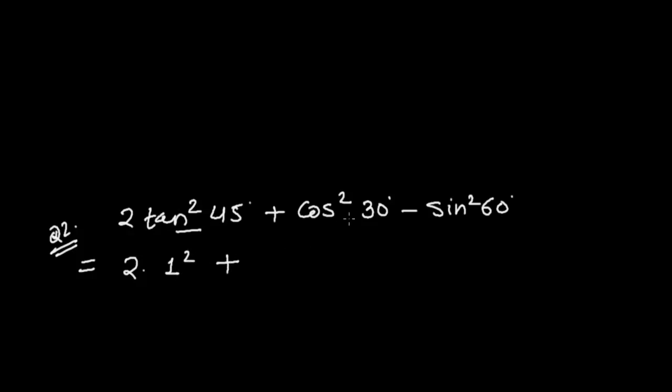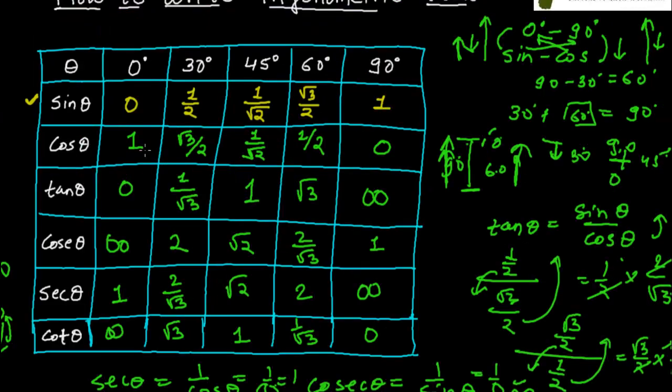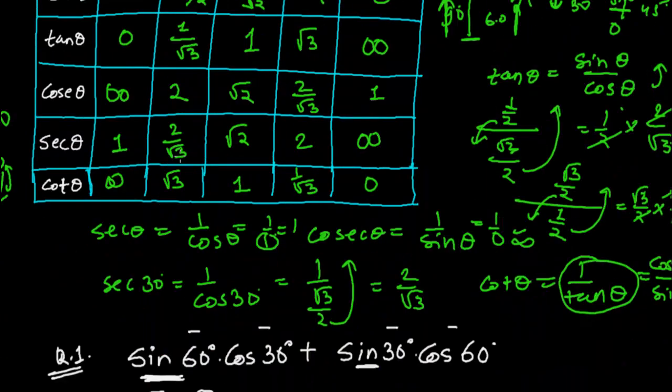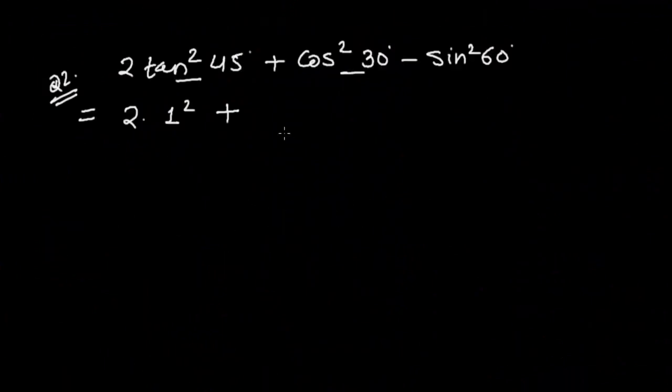Again plus cos square 30. So first we should know the value of cos 30. What is the value of cos 30? Cos 30 is root 3 upon 2. So let me write here. It's root 3 upon 2. It's whole square.